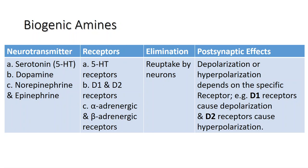Norepinephrine, dopamine, and histamine can be excitatory or inhibitory depending on the receptor type. Addictive drugs such as cocaine and amphetamine exert their effects primarily on the dopamine system, while addictive opiates and functional analogues of opiate peptides can regulate dopamine levels.